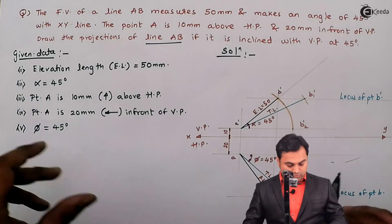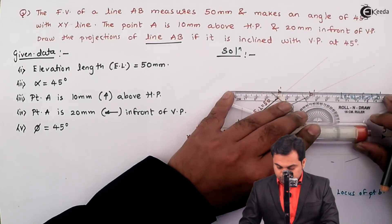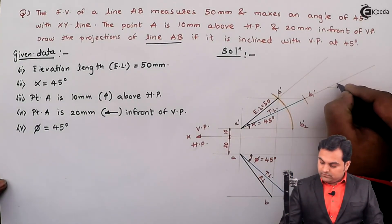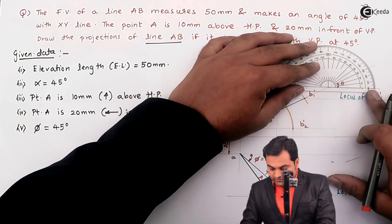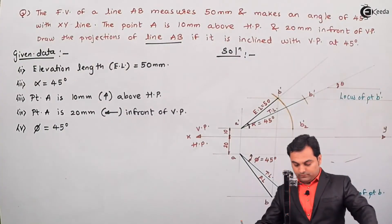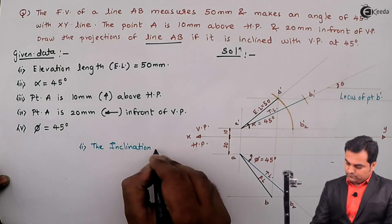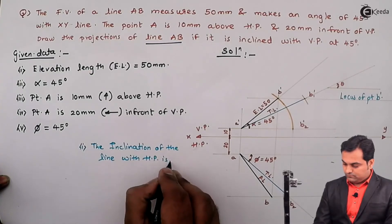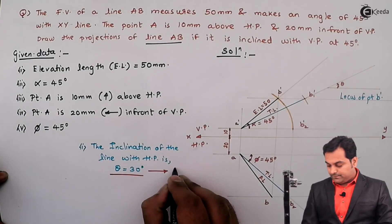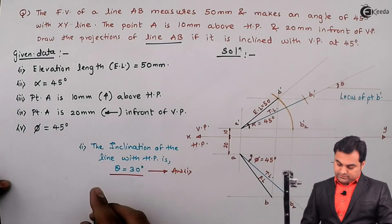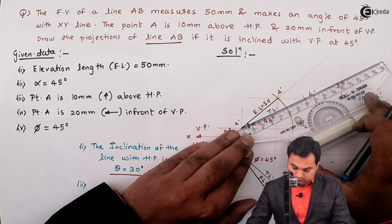The angle made by the true length in the front view — this angle is called theta. The inclination of the line comes out to be 30 degrees. So theta, the inclination of the line with HP, equals 30 degrees — that is answer one. Next, the true length of the line is 70 mm.